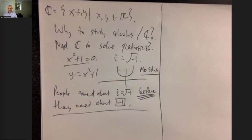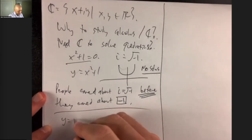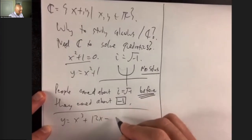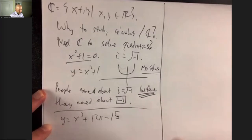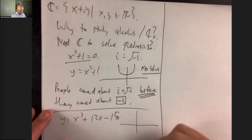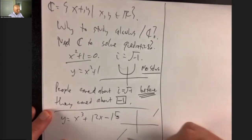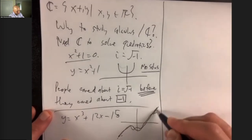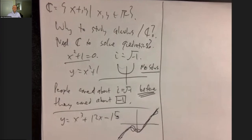How could you possibly have complex numbers before you believe in negative numbers? I'm going to prove this to you. As Ishan said, this happened because people were trying to solve cubic equations. The thing about a cubic — if I have y equals x cubed plus 12x minus 15 — whatever it is, it starts at negative infinity and ends at positive infinity, so it has to cross the x-axis at least once. There is always a root. The question is: how do you find it?